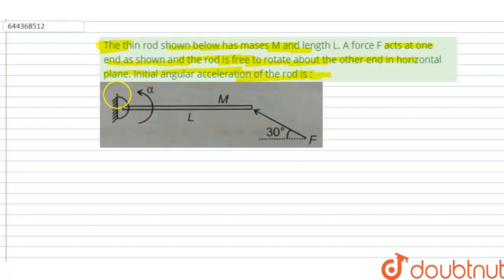Then firstly, given this is a rod having the length is L and the mass is capital M. And force is acting at 30 degrees with the horizontal. Then when we draw the figure, this is a rod and force is acting 30 degrees to the horizontal. Then this is angle 30 degrees.